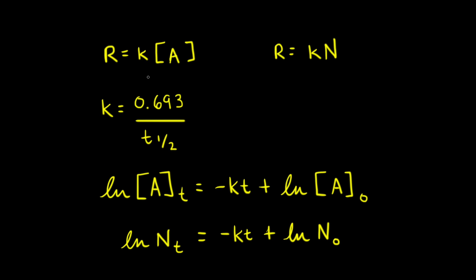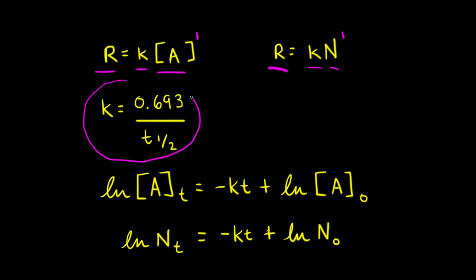For a chemical reaction with reactant A that's first order, the rate law says the rate of reaction equals the rate constant K times the concentration of A to the first power. Since radioactive decay is a first-order process, we can write that the rate of decay equals K times N, where N is the number of radioactive nuclei in a sample. We can also use the equation for the rate constant from first-order kinetics.